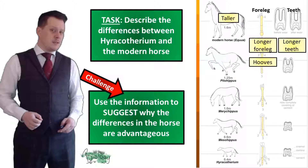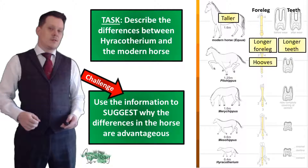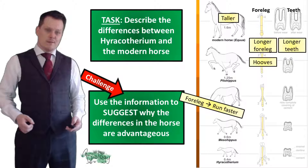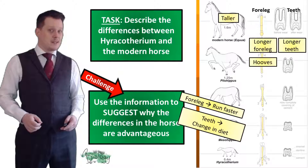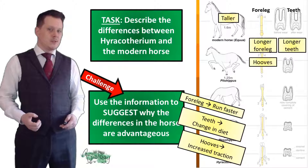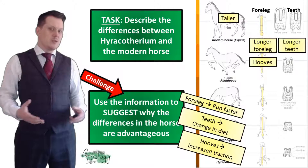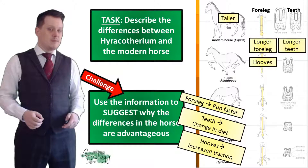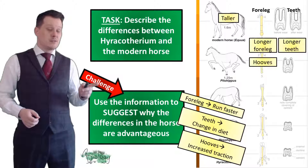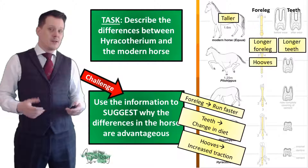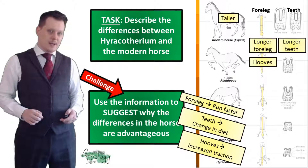Why are these characteristics more suited to their environment? The longer foreleg allows the modern horse to run faster. Bigger teeth imply a change in diet. And the development of hooves shows a need for increased traction. In the time of Hyracotherium the ground could have been very dry and arid, whereas over the hundreds of thousands of years it took to evolve, the land could have become a lot wetter, requiring better traction.